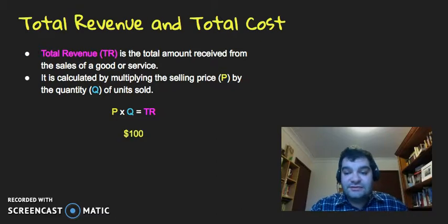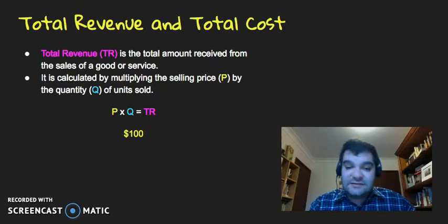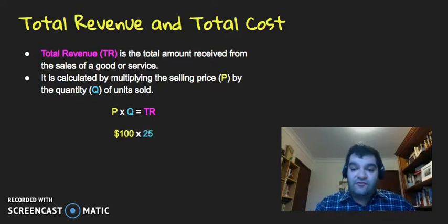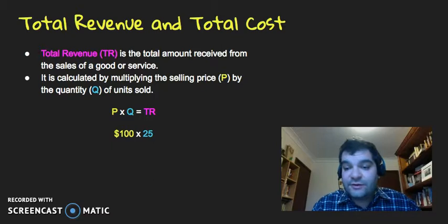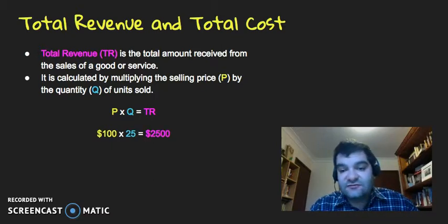For example, if the selling price of something is $100 and we multiply that by 25 — say, how many we're going to sell — the total revenue is going to be $2,500.